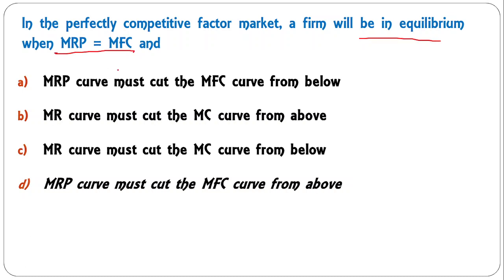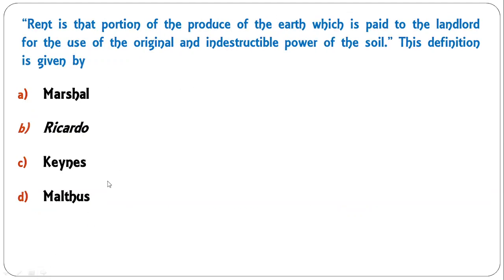In a perfectly competitive factor market, a firm will be in equilibrium when MRP equals MFC (marginal revenue product equals marginal factor cost). The second condition is that the MRP curve must cut the MFC curve from above. Note: in the product market the MR curve must cut the MC curve from below — don't confuse the two conditions. In the factor market, the MRP curve must cut MFC from above.